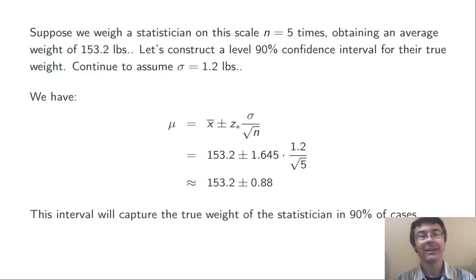Simplifying that slightly, we get 153.2 plus or minus .88 pounds. Since this is a level 90% confidence interval, we expect that this interval will capture the true weight of the statistician in 90% of cases.